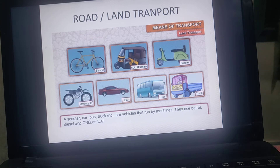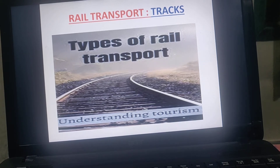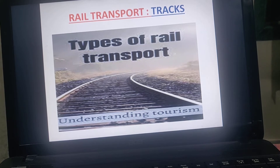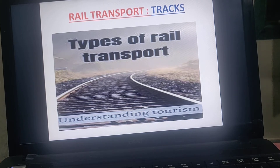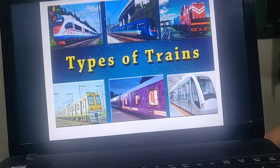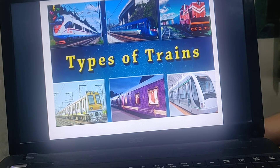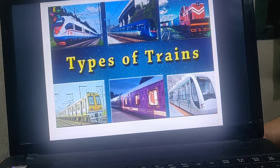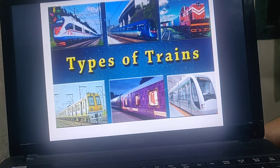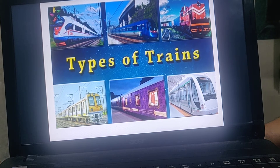We studied rail transport. A train runs on land but on special tracks, so it is called rail transport. We studied different types of trains — local train, mail train, goods train, metro rail, and monorail. Each mode like roadways and railways has signals to follow, and for buses and trains we must buy tickets as they are public transport.